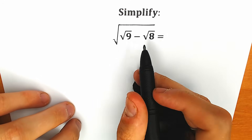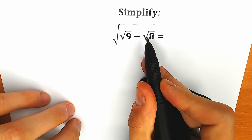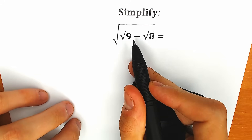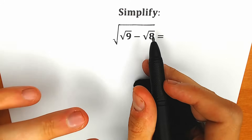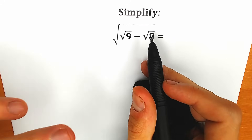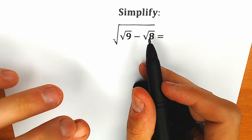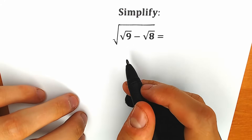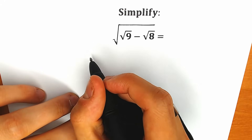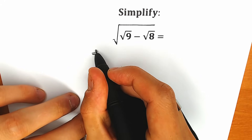A lot of students might be thinking: square root of 9 minus square root of 8 — maybe this is equal to 1, and square root of 1 is the correct answer. But square root of 1, or 1, is an absolutely wrong answer. So right now let's figure out how we can solve this question.